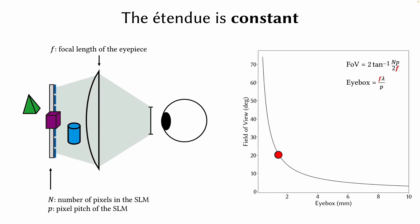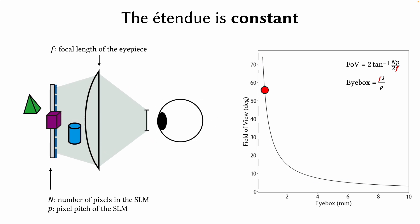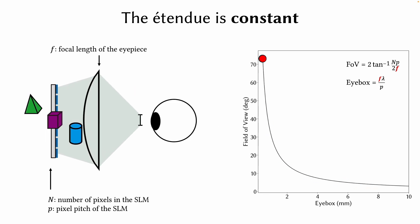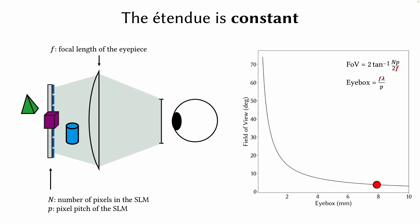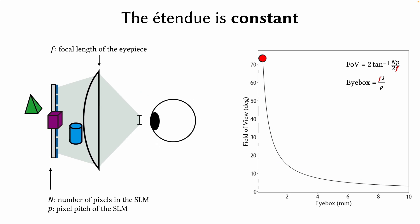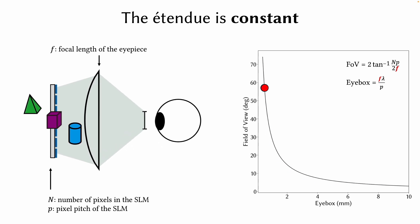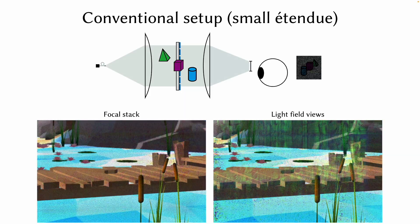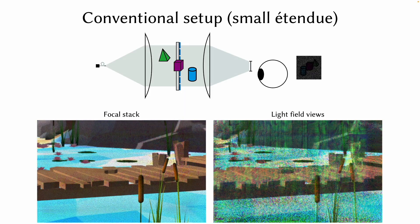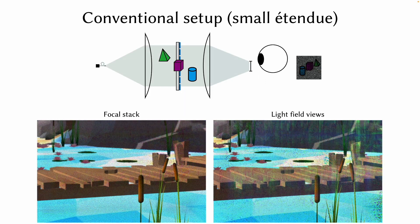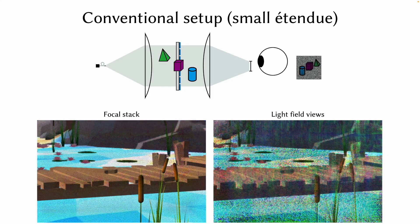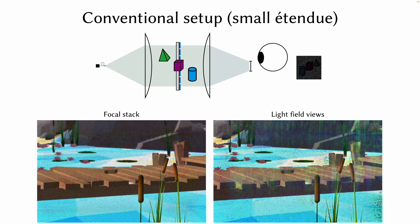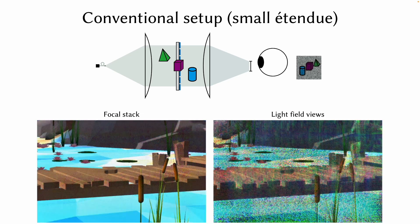One can use a longer focal length lens to trade field of view off for eyebox, or use a shorter focal length to trade eyebox off for field of view. However, the total information capacity of the display cannot be expanded. When a user looks at a conventional holographic display set up with a small etendue, the image will gradually fade away and eventually disappear as the pupil moves outside the eyebox.